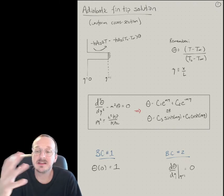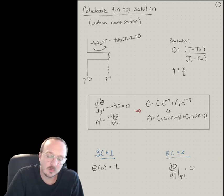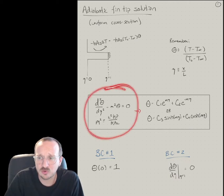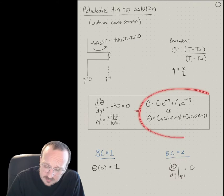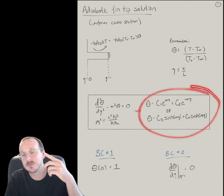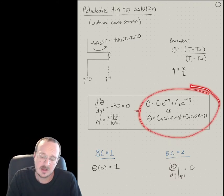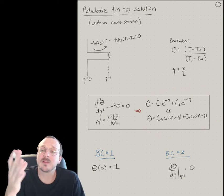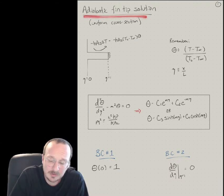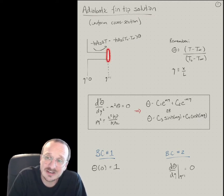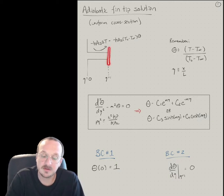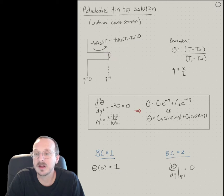In this video I want to talk about the adiabatic fin tip boundary condition. We've been talking about fins of uniform cross-sectional area. We first derived the differential equation from an energy balance, solved it, and showed that two particular solutions can be summed — either exponentials or hyperbolic trig functions. We did an example in the last video of an infinite fin. Now let's see what happens if we change the boundary condition at the tip. Let's say it's a finite fin, but there's no heat loss through the fin tip.